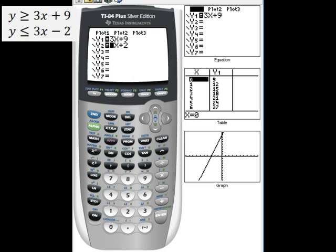Now let's set how we need to shade. If we were graphing this on paper we would use a solid line for each. For the first one it was y is greater than or equal to 3x plus 9, so we're going to go all the way to the left where it's flashing. We're going to press enter until we get the top shaded option which we have here flashing.